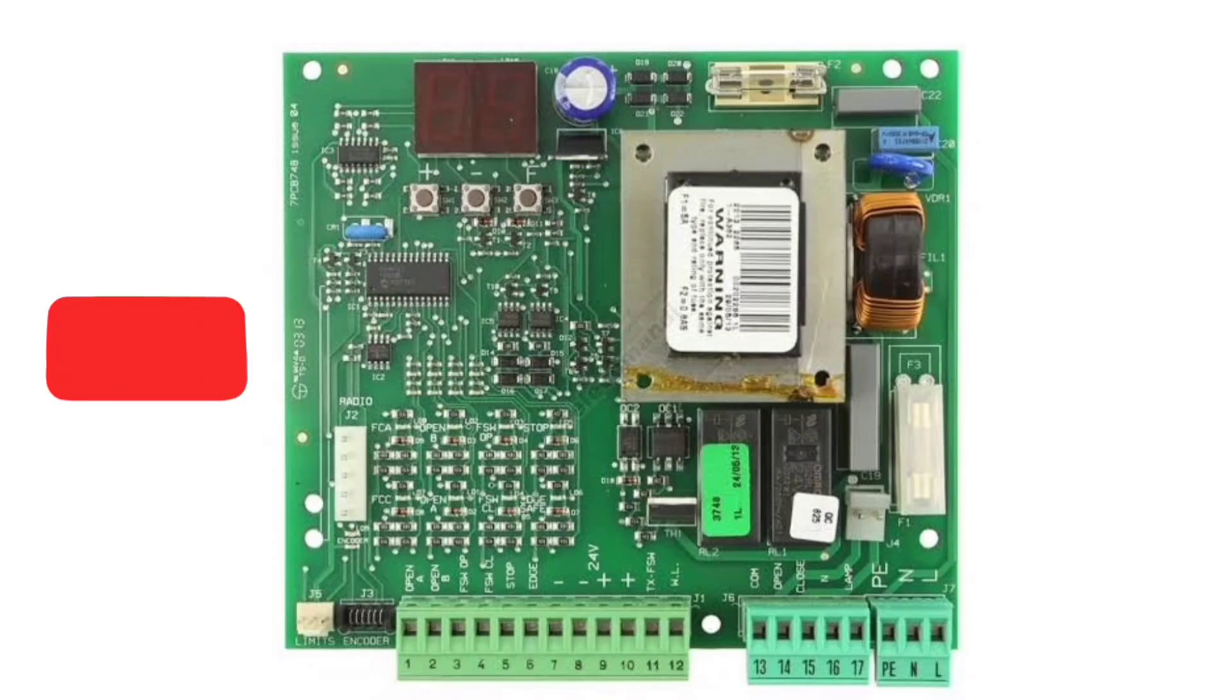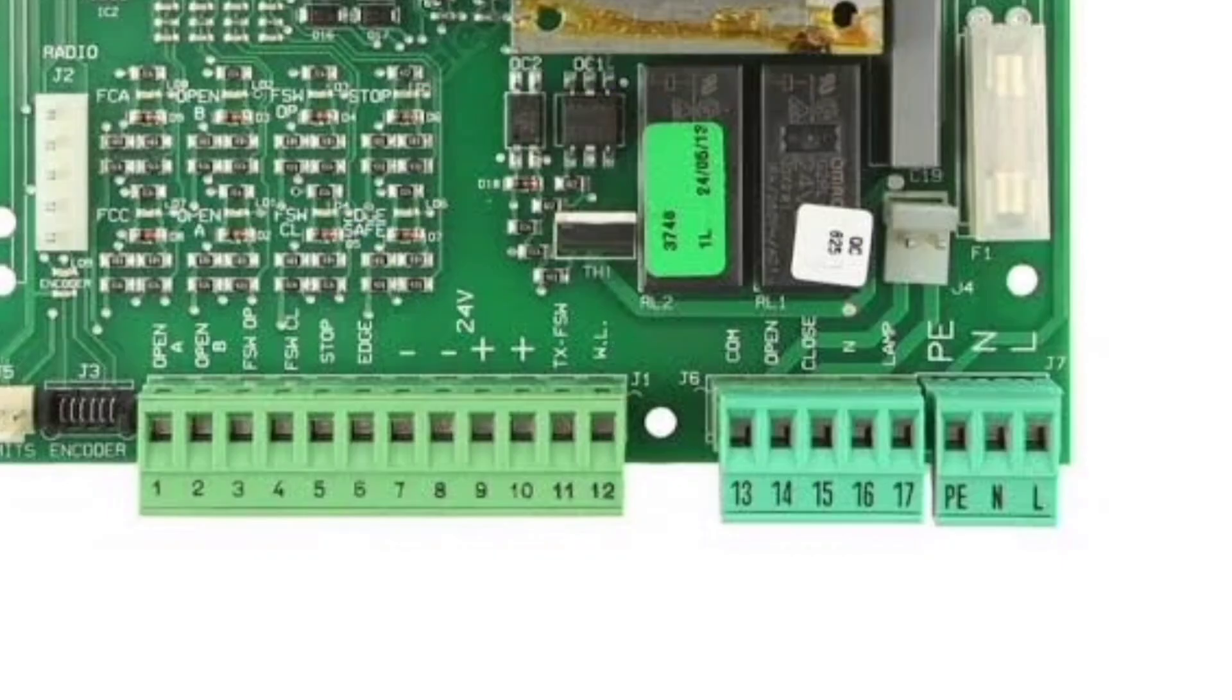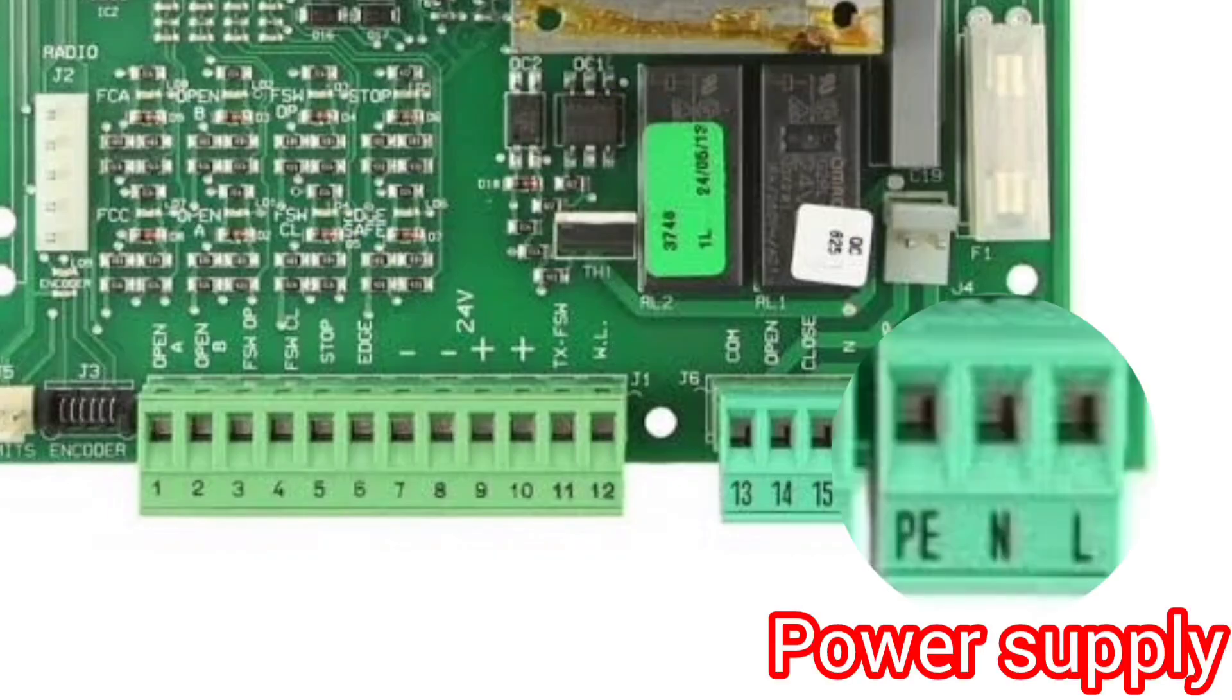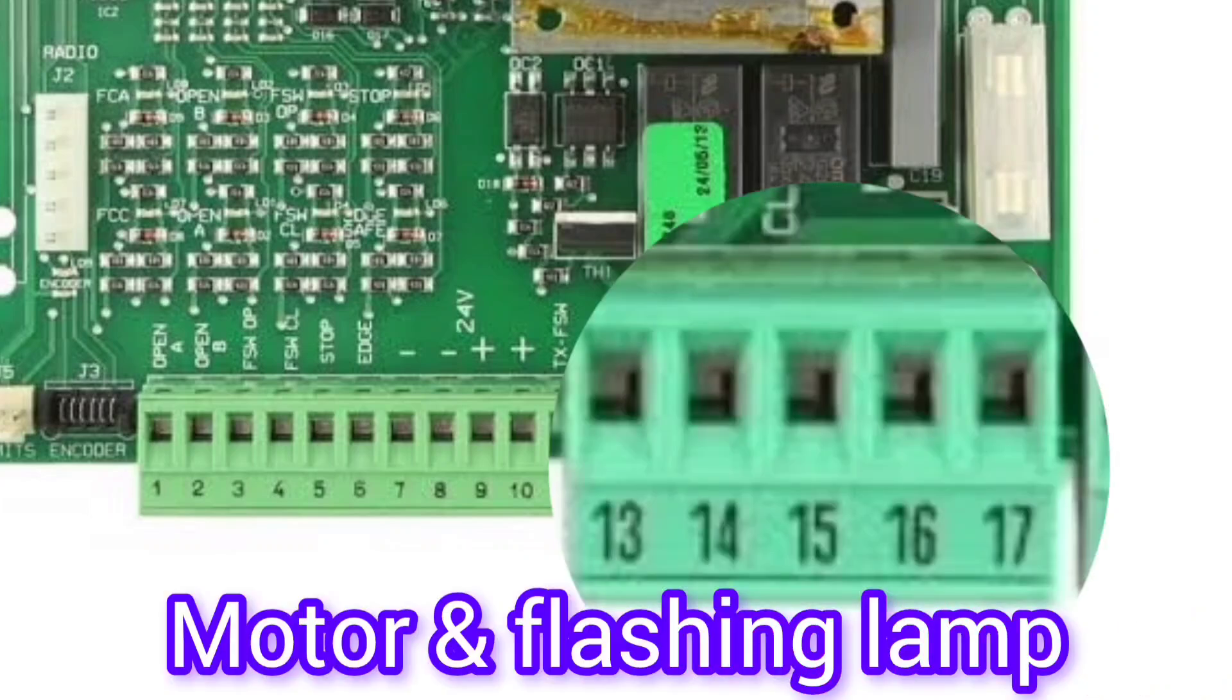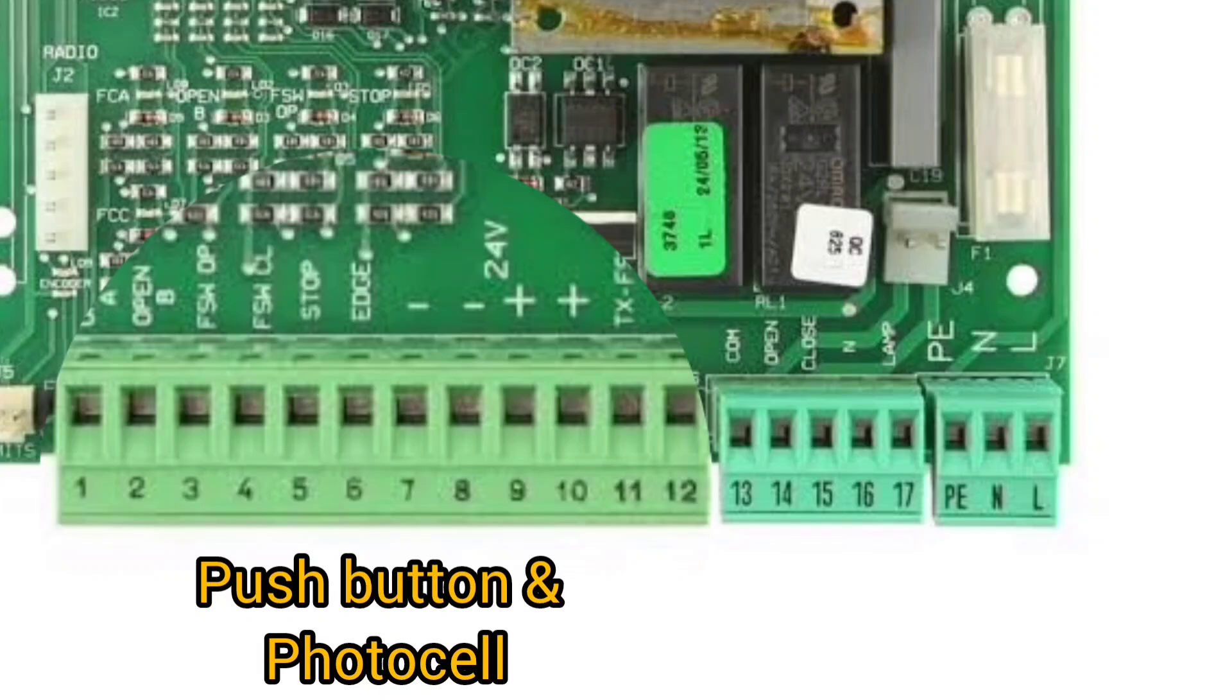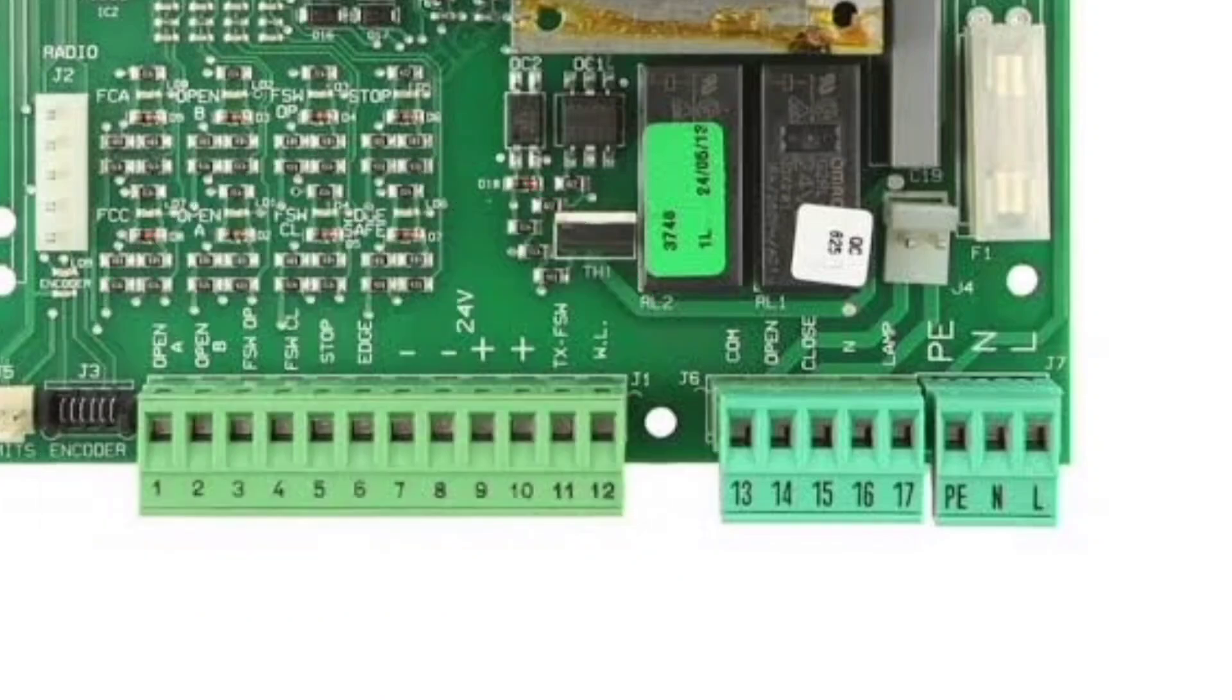This is how 740D control board looks like. Here we see 3 pin connector to connect power supply, 5 pin connector for motor and flashing lamp, 12 pin connector to connect push button, photocell and edge safety devices.